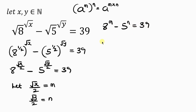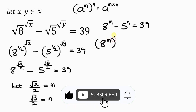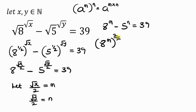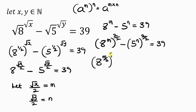Our next step is to rewrite this as 8 to the power of m over 2, squared, minus 5 to the power of n over 2, squared, equal to 39. The idea behind this is because I want to make this a difference of two squares. So we have 8 to the power of m over 2 all squared, minus 5 to the power of n over 2 all squared, equal to 39.